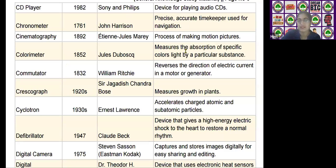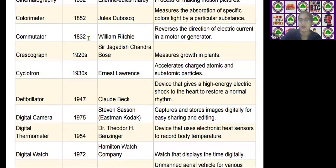The next scientific device is the commutator, invented by William Ritchie in the year 1832. It is used to reverse the direction of electric current in a motor or generator.